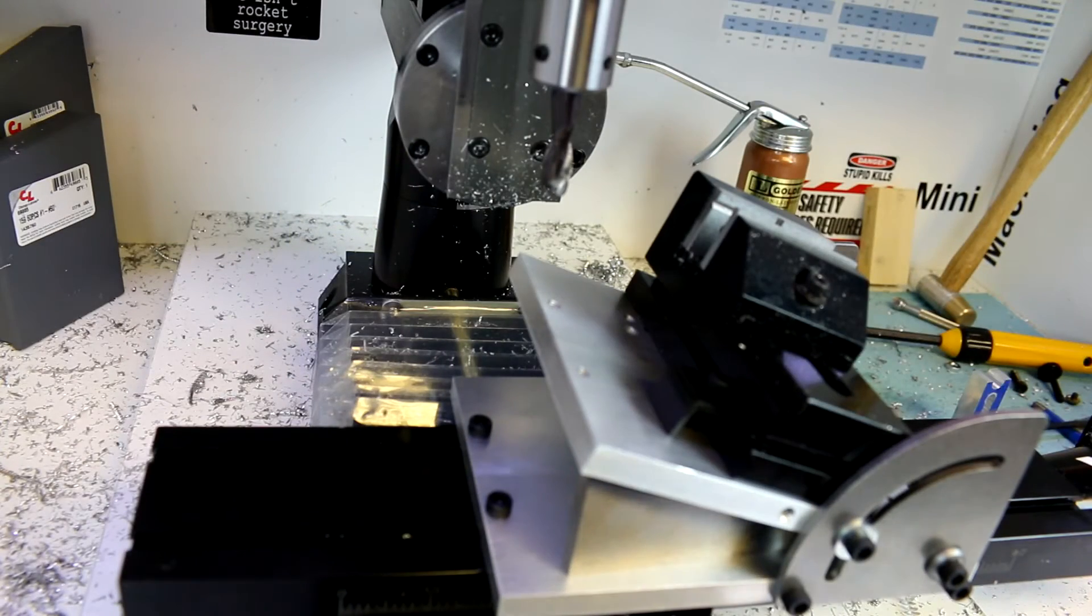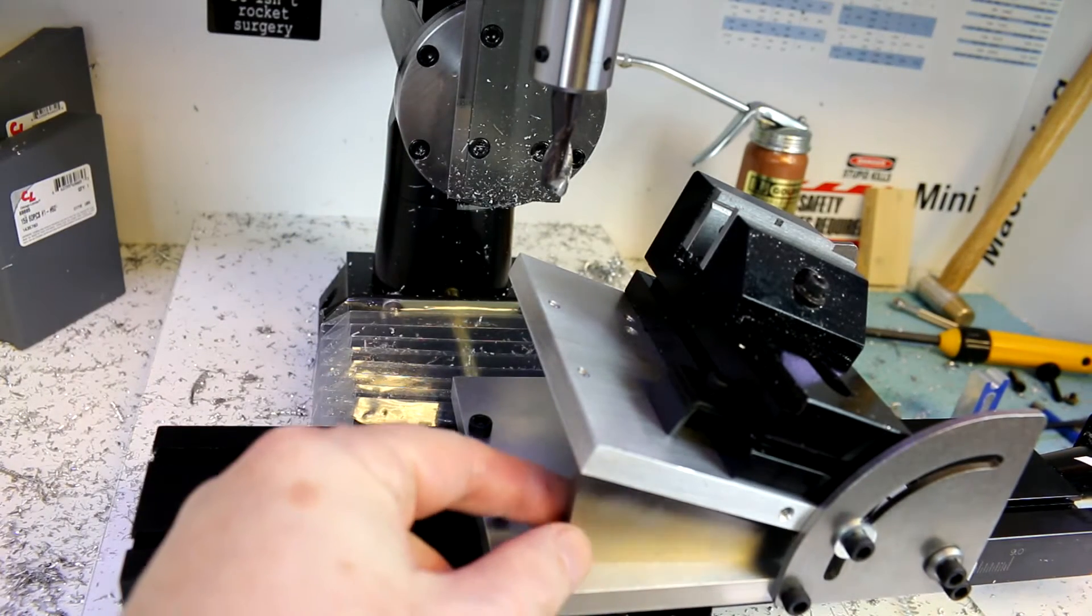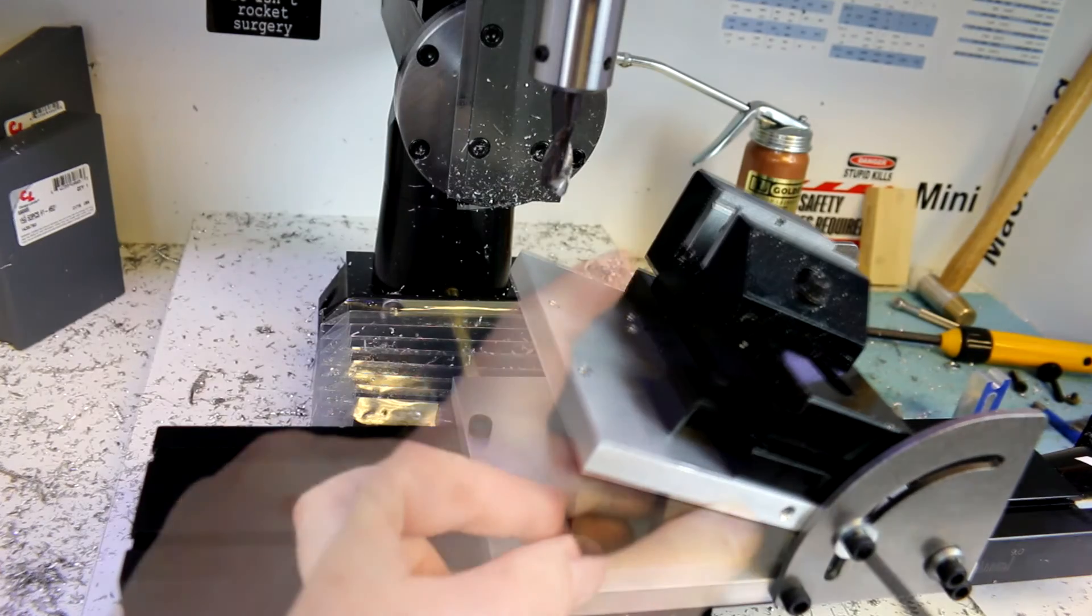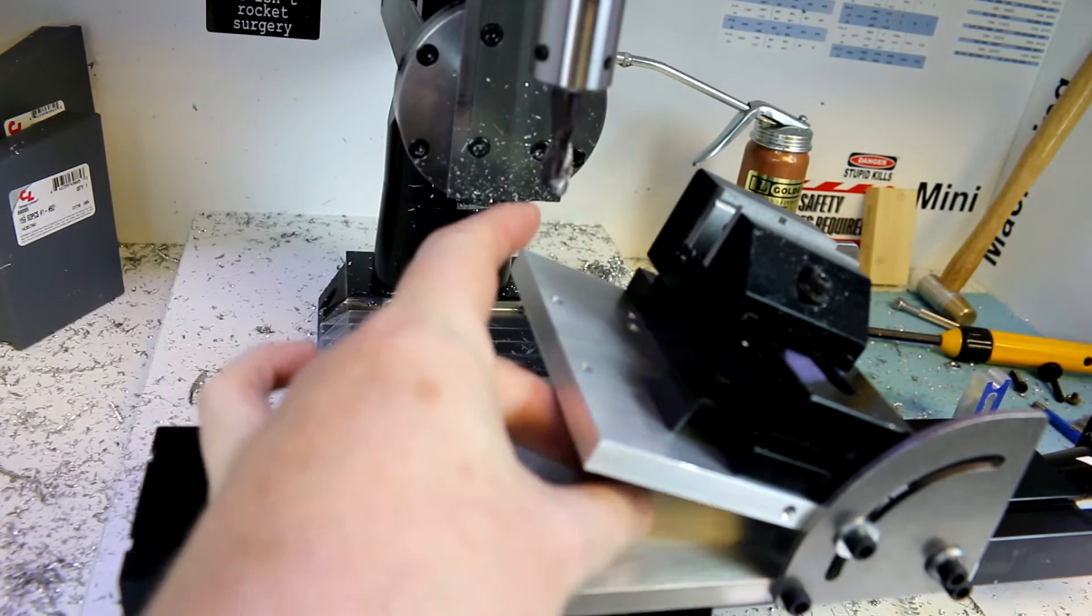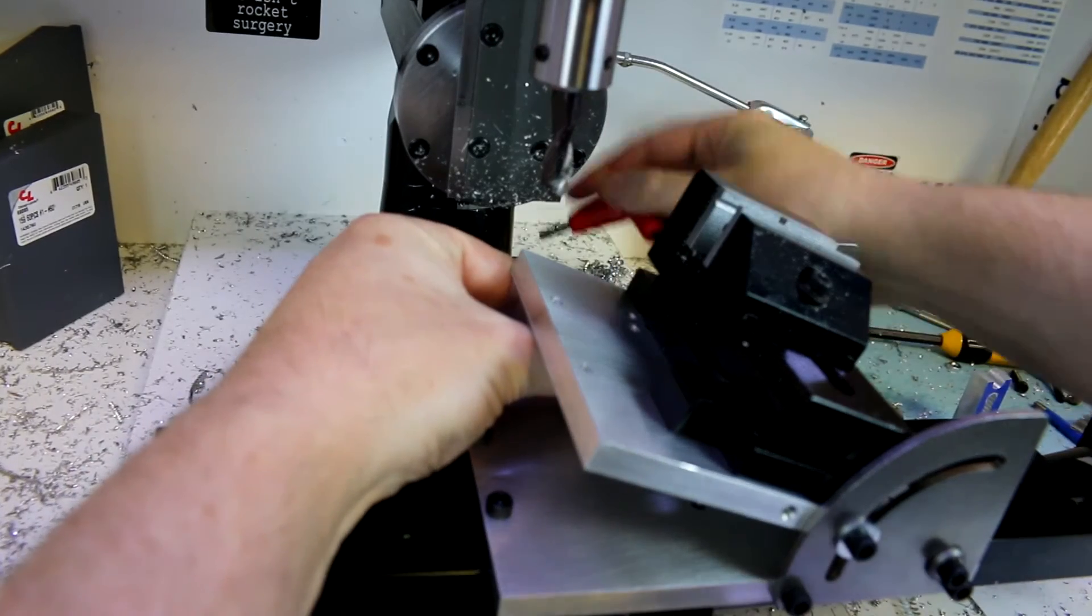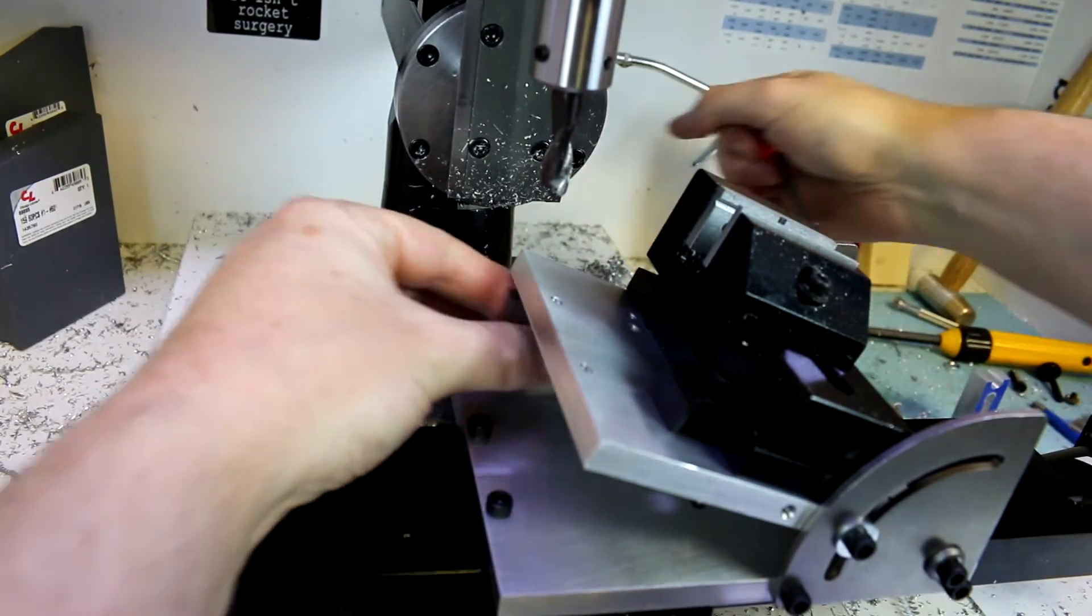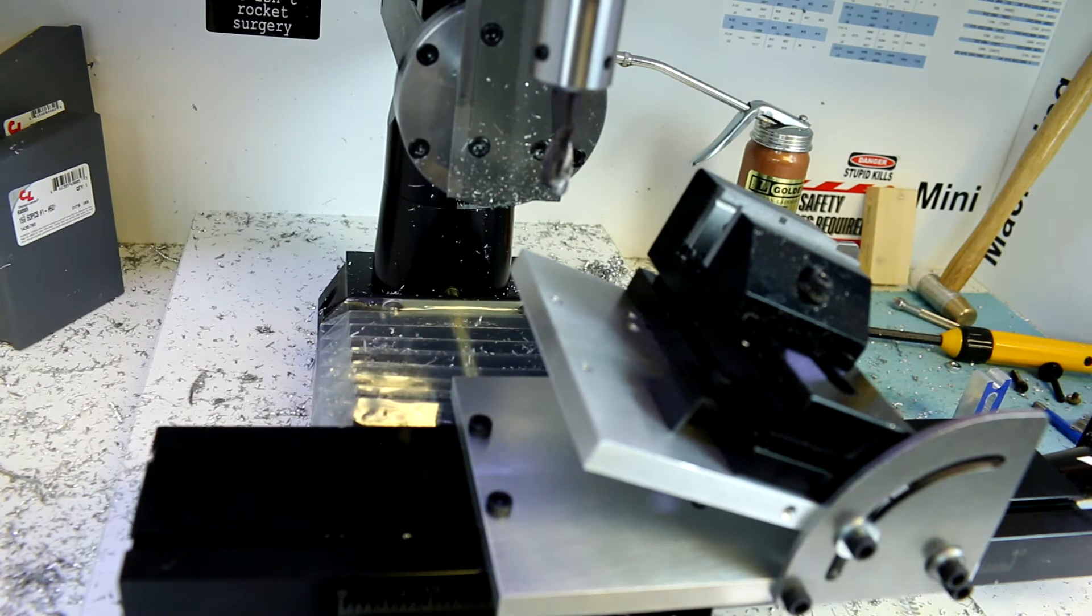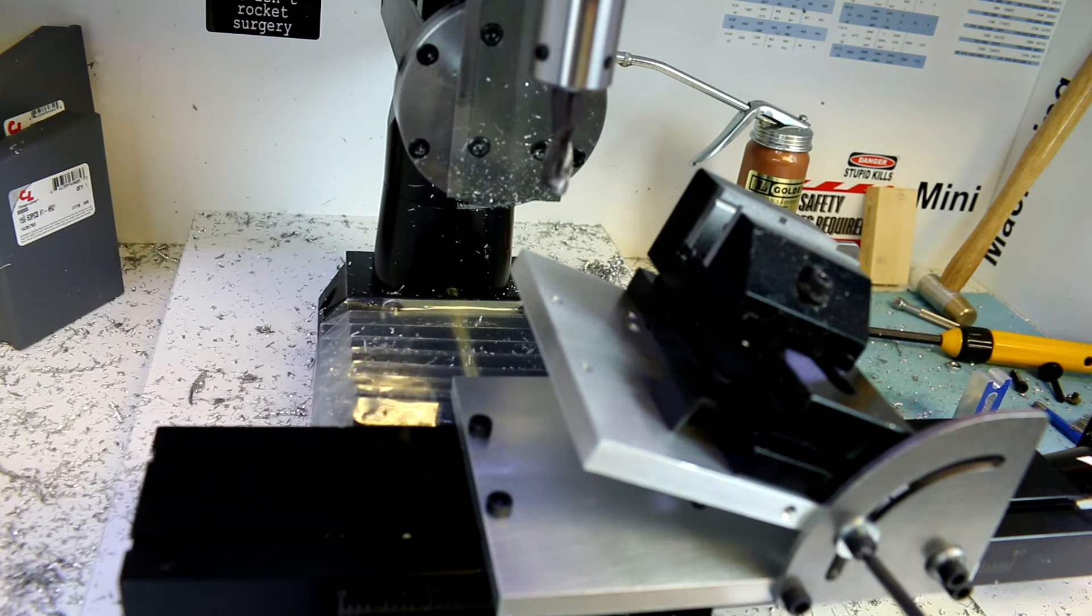So this is an example of an angle block. Now this happens to be a 20-degree block, and we can use it to set a fairly precise angle. You can also use sine bars and angle plates, and there are a lot of other ways to do this. So fixed angle plates, I should say, rather than this being an adjustable angle plate.